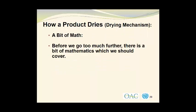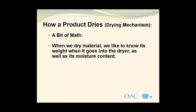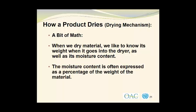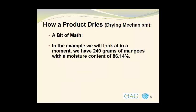Before we go too much further, there is a bit of mathematics that we should cover — please don't stress about it. When we dry material, we like to know its weight when it goes into the dryer as well as its moisture content. Sometimes we don't know the actual moisture content but may have an idea of the approximate value. In the example we will look at, we have 240 grams of mangoes with a moisture content of 86.14%, determined on a laboratory moisture balance.